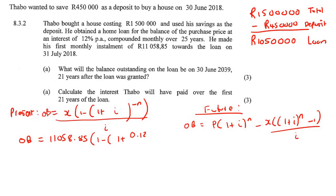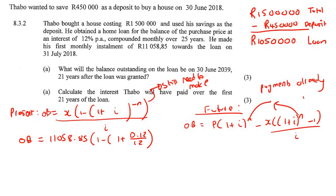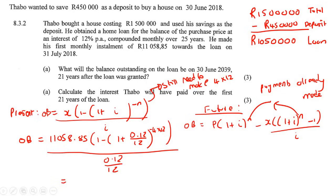So for the present value method: N = 4 × 12, interest rate = 12% compounded monthly (0.12/12). Type it all into the calculator and we get an outstanding balance of R419,948.32.